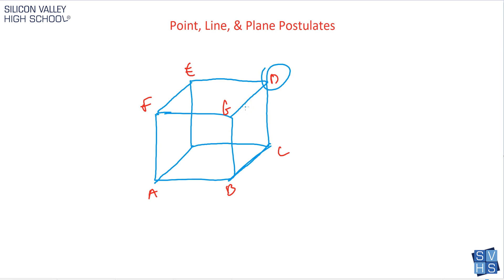And they might say, name a line that is on the plane A, F, G. And you can say, well, F, G is on that plane. So is F, B, and so is F, A. So you'll look at this cube, and it'll answer a bunch of questions. And it's pretty straightforward. I think you'll get them right.